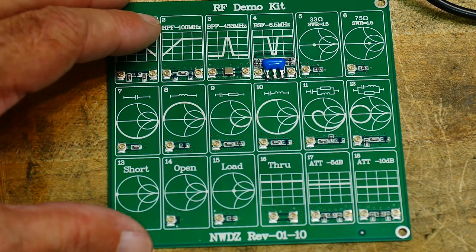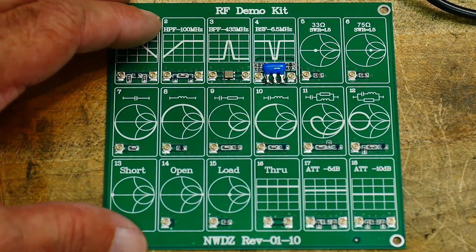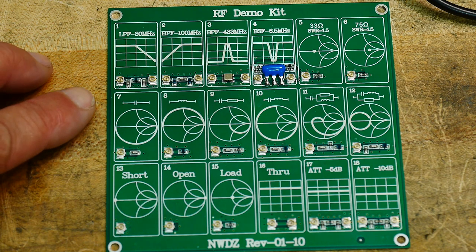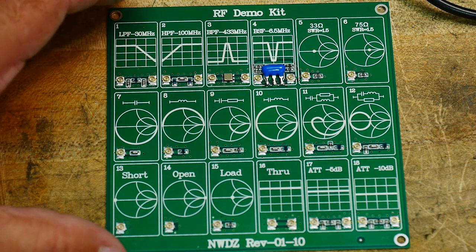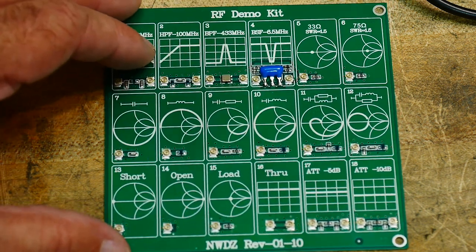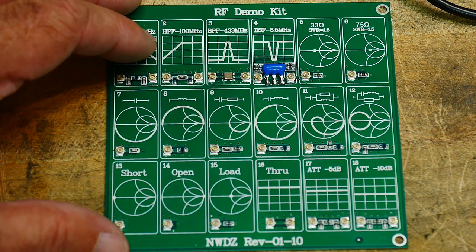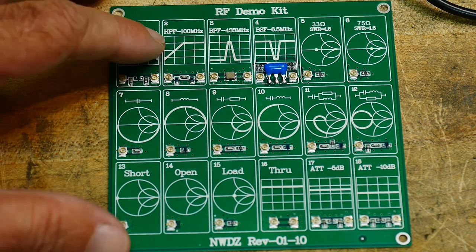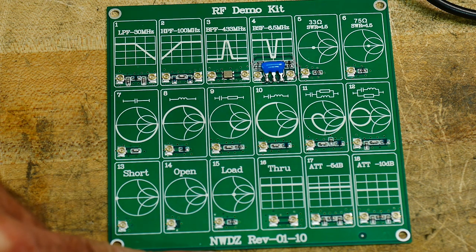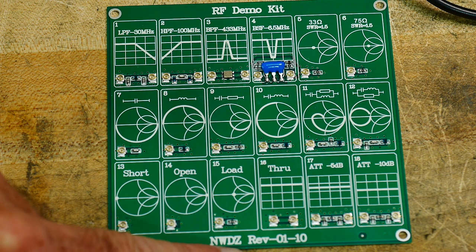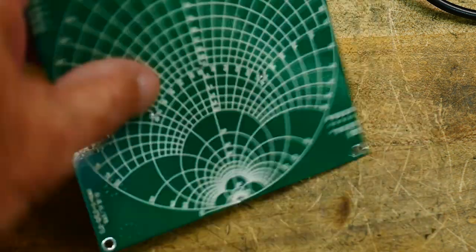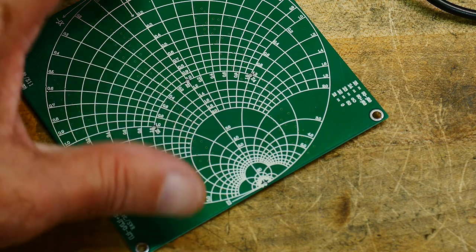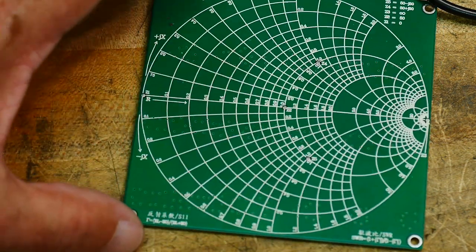All right, so that's a brief introduction of this little board, if you want to go buy one. They're really cheap. I don't know if you can get them as easily as I did. I mean, or have the problems that I had. It took me three months to get this stupid thing. They're not very expensive, but for whatever reason, maybe there's no stock of them or something. Maybe they fixed that problem by now. This one says NWDZ REV 0110 RF demo kit. And on the back side, it has a picture of a Smith chart and a bunch of writing in Chinese.